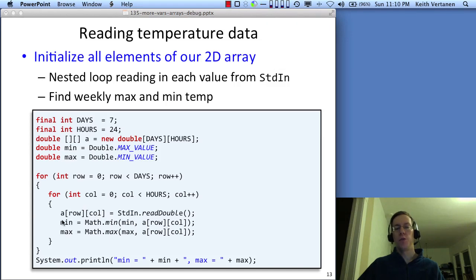And then I'm also doing a little extra calculation. I'm keeping track of the minimum temperature in the week and then the maximum temperature. We've not seen these two functions before: Math.min and Math.max. They do pretty much what you'd expect. If you give Math.min two numbers it returns the minimum. If you give it Math.max two numbers, it returns the maximum.